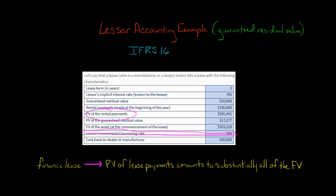The present value of the three rental payments of $100,000 over three periods at 5% is $285,941. The present value of the guaranteed residual value of $20,000 is $17,277. If you add together the present value of the rental payments and the present value of the guaranteed residual value, that gives you the fair market value of the asset at the commencement of the lease: $303,218. That also happens to be the amount of our initial lease receivable.